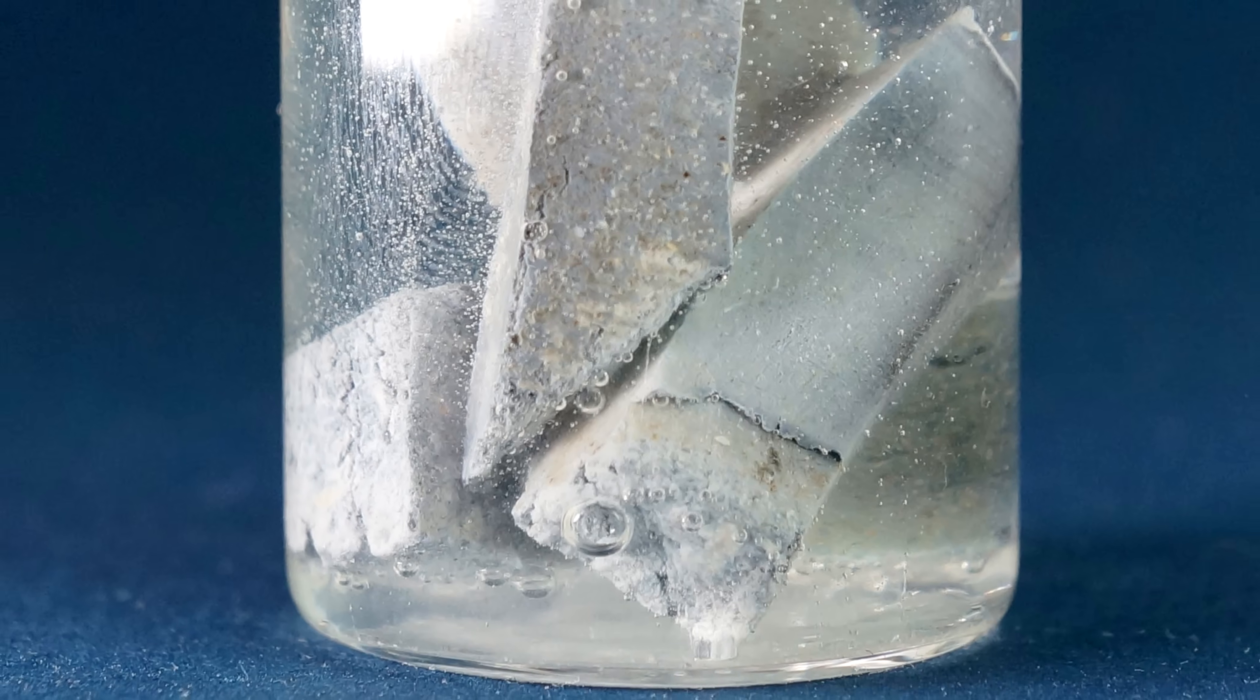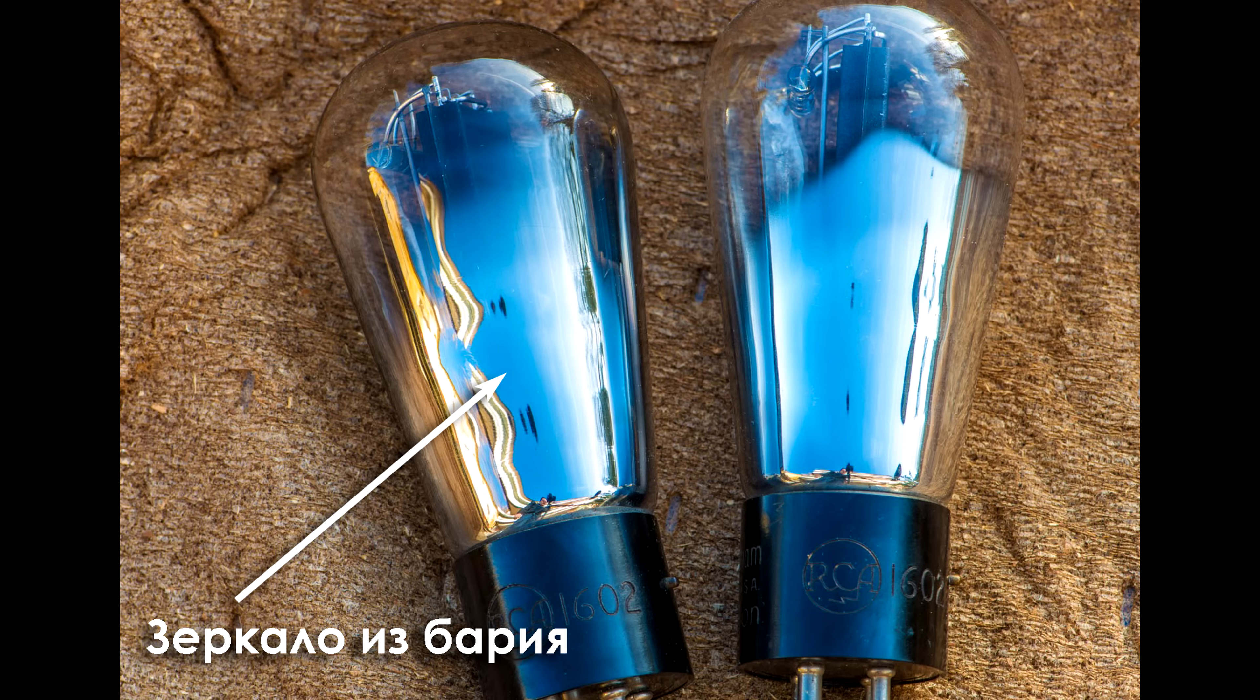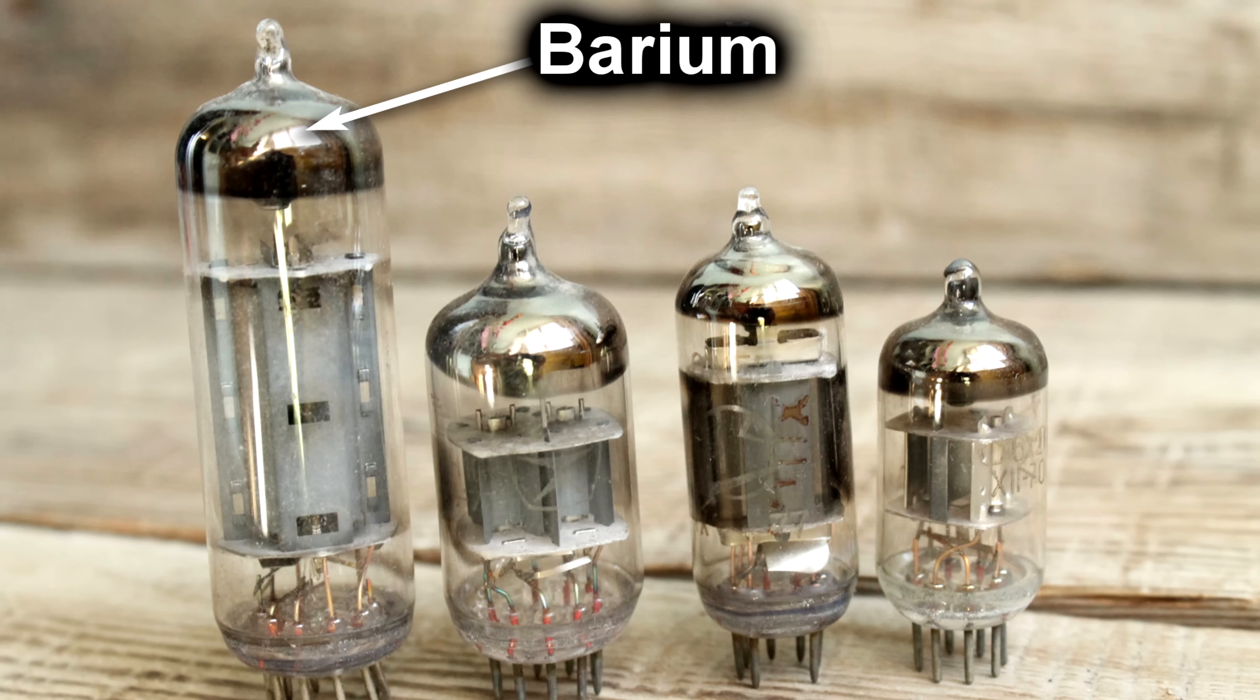Nowadays, the metal barium is mainly used as an additive to aluminum alloy. In the heyday of tube radio, barium was used as a getter, that is, an absorber of gases in vacuum tubes to maintain high vacuum in them.